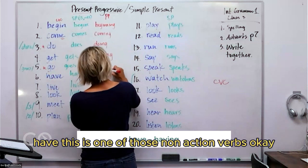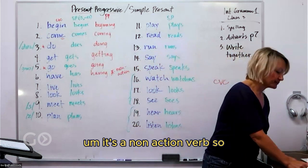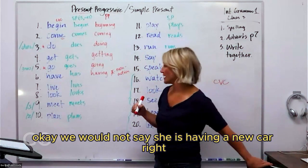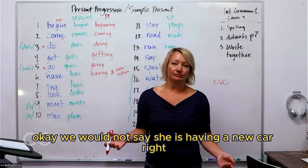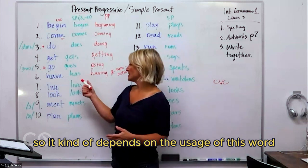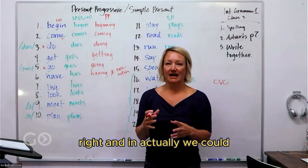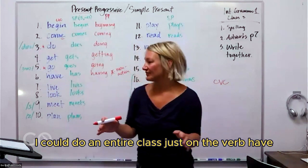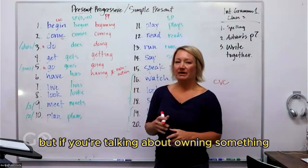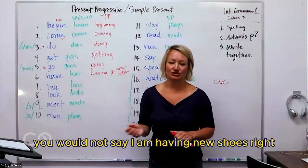Have, this is one of those non-action verbs. It's a non-action verb. We can say she is having a good time, she is having fun. We would not say she is having a new car, right? We would say she has a new car. So it kind of depends on the usage of this word if we use the ING form or not. Have is a verb that represents many different actions, and actually we could do an entire class just on the verb have. But just keep in mind that you can say I'm having a good time because then the verb is to have a good time. But if you're talking about owning something or possession, then you would not say this. You would not say I am having new shoes. You would just say I have new shoes.